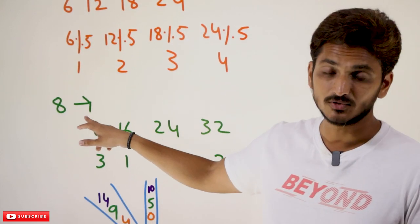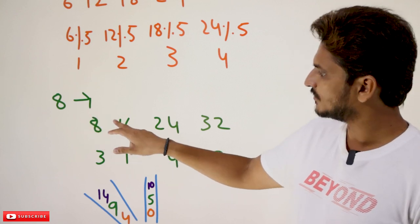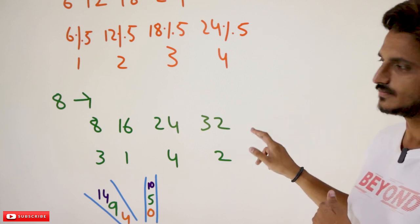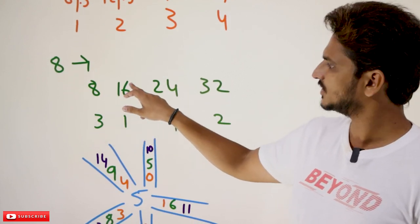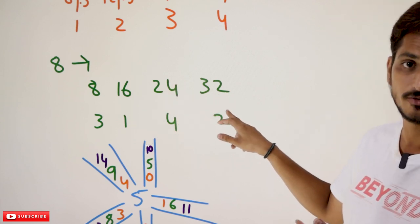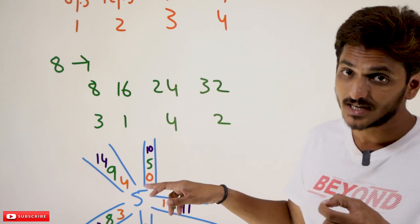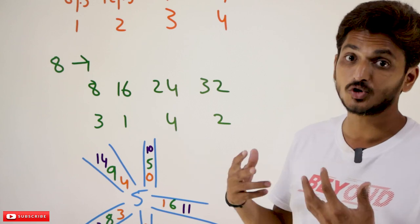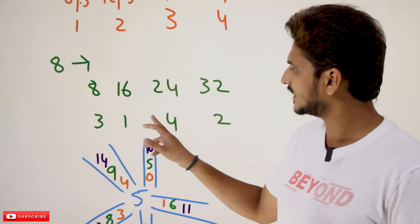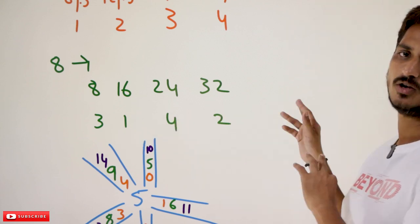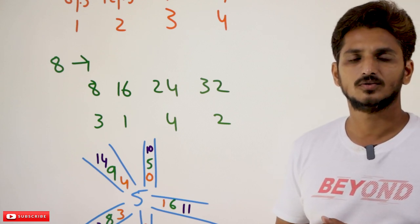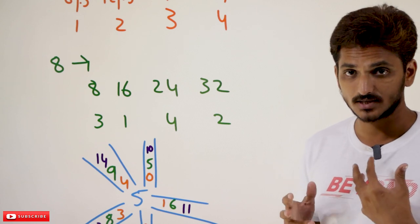Similarly, let's take one more example. 8 is not divisible by 5. You take any multiples of 8: 8, 16, 24, 32, 40, and so on. 8 mod 5 = 3, 16 mod 5 = 1, 24 mod 5 = 4, 32 mod 5 = 2. See here, it is going to generate the numbers 1, 2, 3, 4, but it is not maintaining the sequence. That is the point you need to understand. Anyhow, it is going to generate the numbers 1, 2, 3, 4, 0 — again 1, 2, 3, 4, 0 — again like that. This is the point you need to understand in order to understand Fermat's theorem.